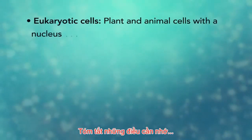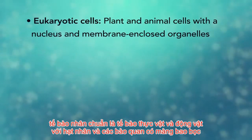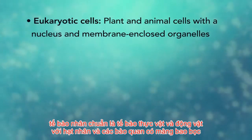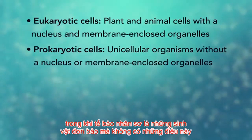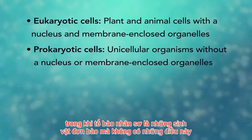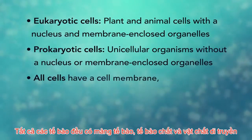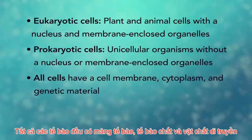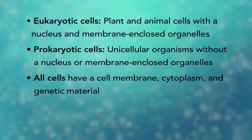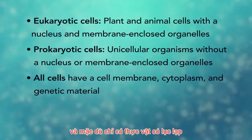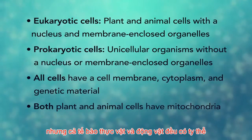In summary, remember: eukaryotic cells are plant and animal cells with a nucleus and membrane-enclosed organelles, while prokaryotic cells are unicellular organisms without these things. All cells have a cell membrane, cytoplasm, and genetic material. And even though only plant cells have chloroplasts, both plant and animal cells have mitochondria.